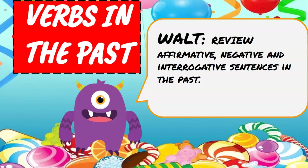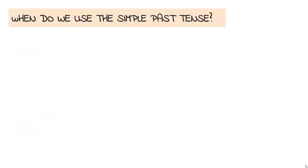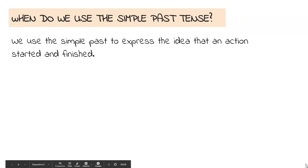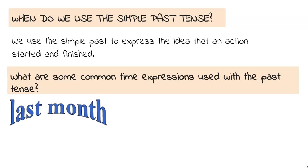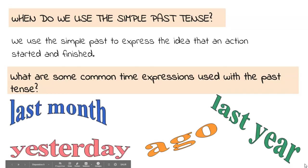Now we're going to review the verbs in the past. Today we're learning to review affirmative, negative, and interrogative sentences in the past. That means that we use verbs in the past tense to express the idea that an action started and finished. What are some common time expressions? Last year, long ago, last month, yesterday.